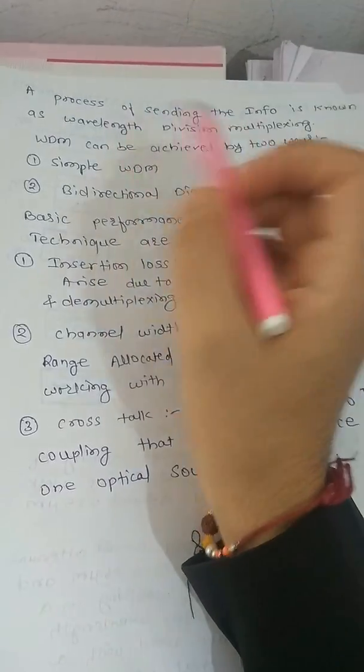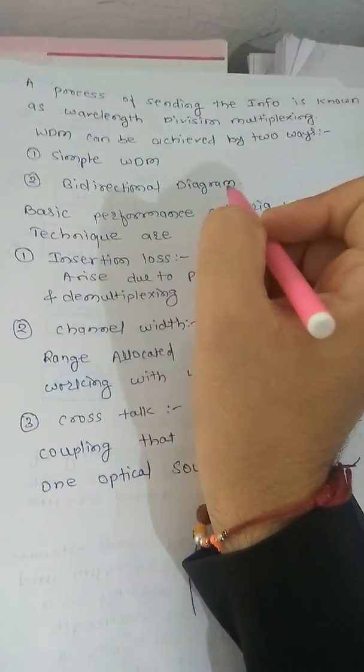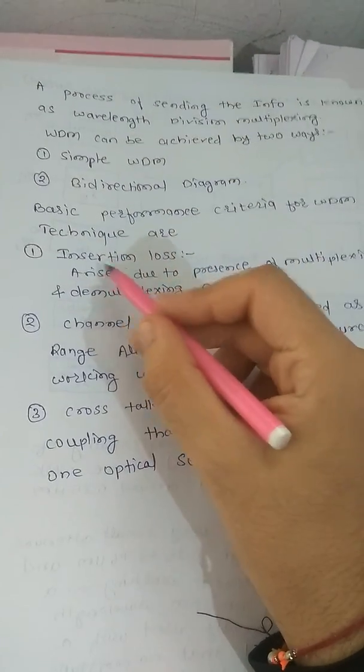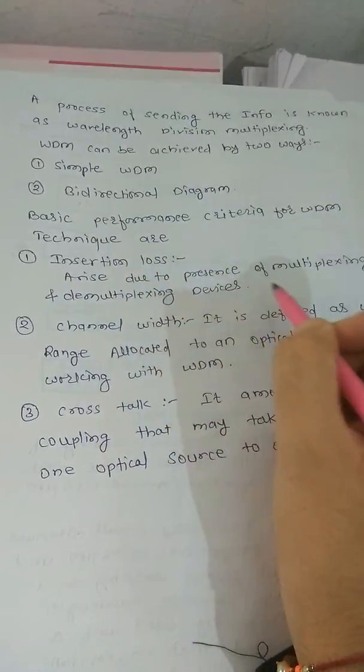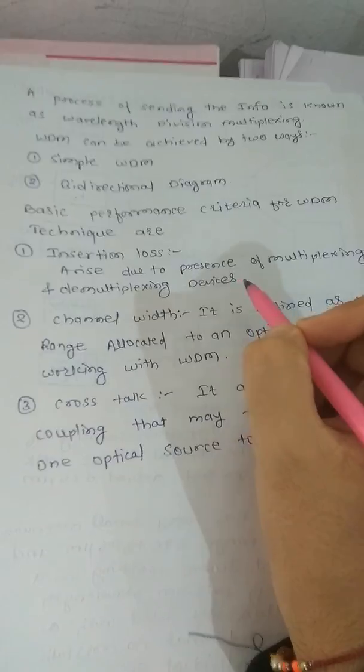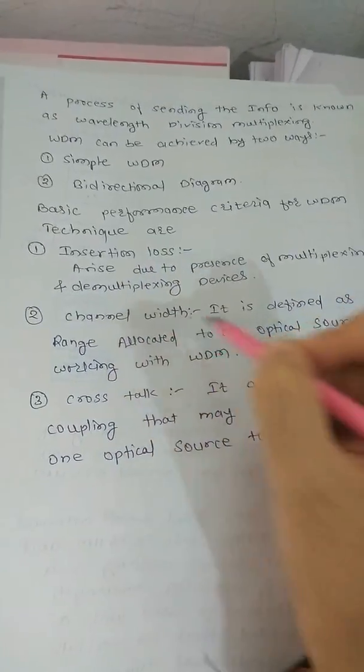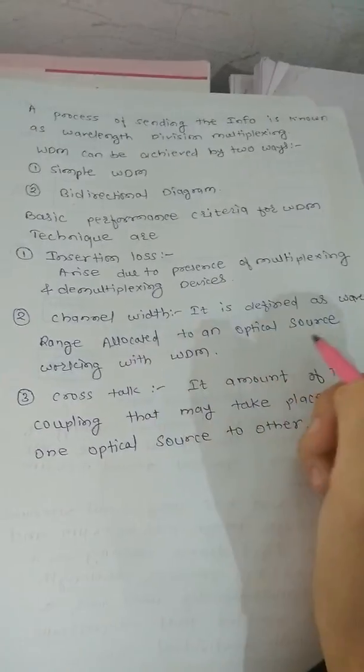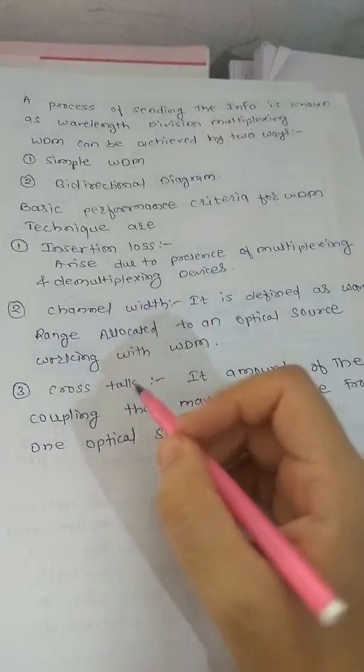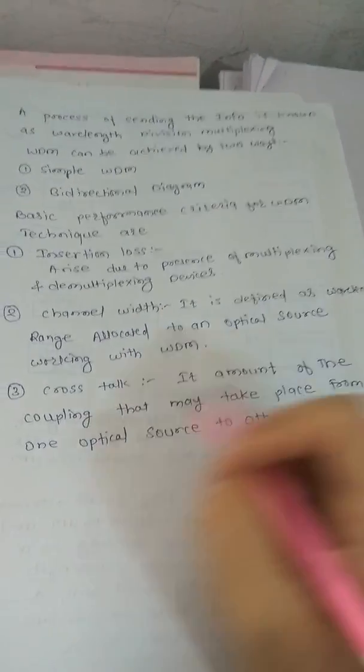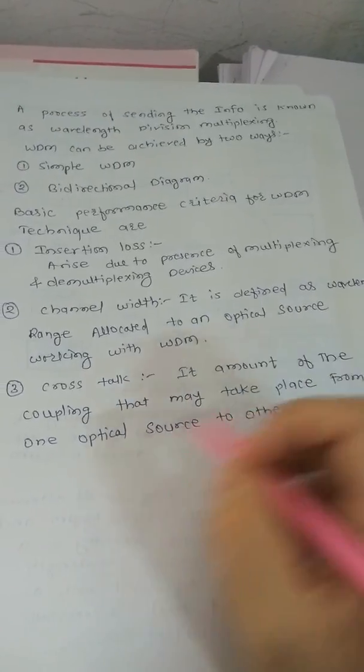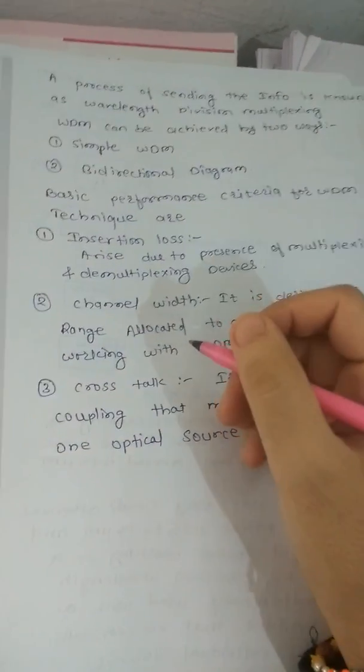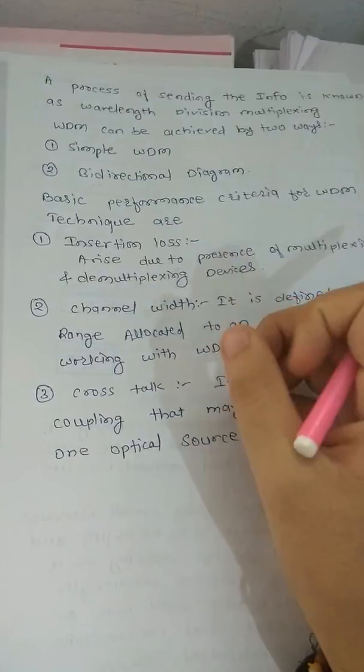WDM can be achieved by two ways: simple WDM or bi-directional. Basic performance criteria for WDM techniques are: insertion loss, which arises due to the presence of multiplexing and demultiplexing devices; channel width, defined as the wavelength range allocated to an optical source working with WDM; and crosstalk, the amount of coupling that may take place from one optical source to another.